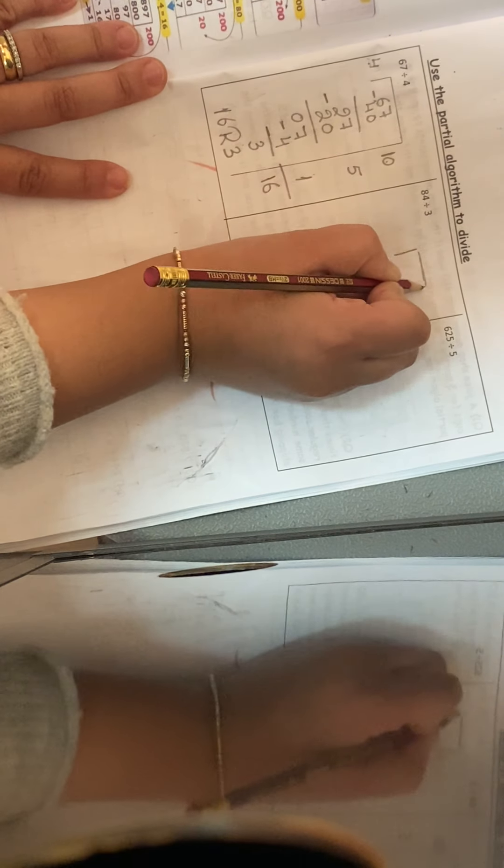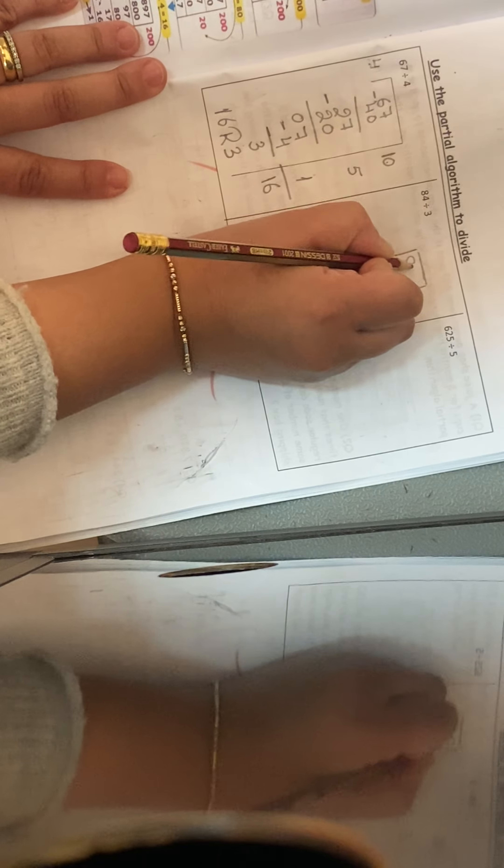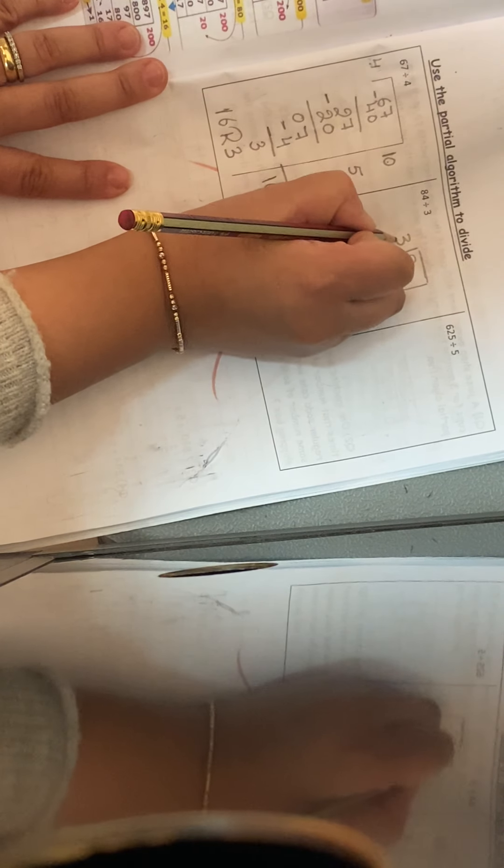Another one. 84 divided 3. I will draw my work out, put the dividend inside, the divisor outside, and start.